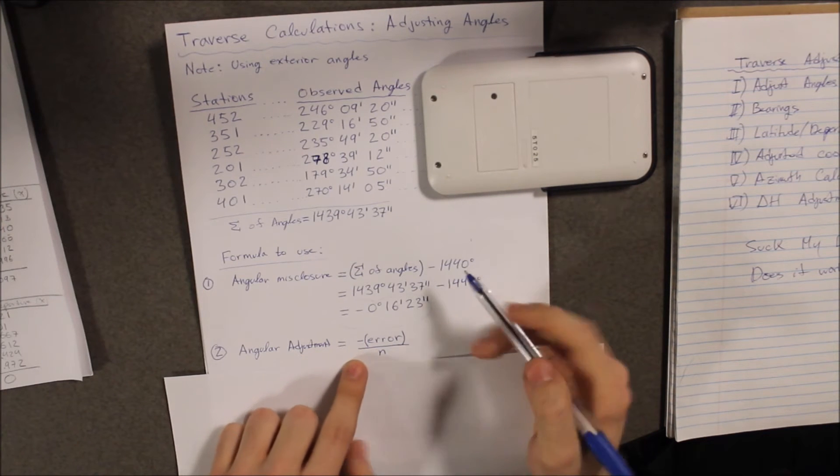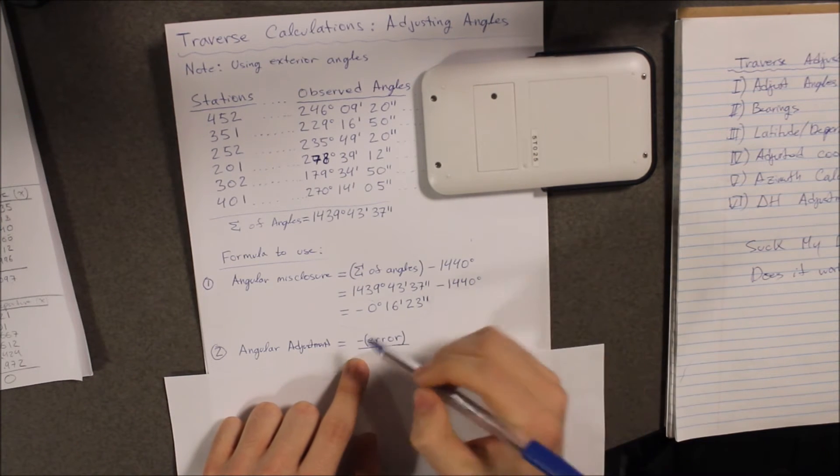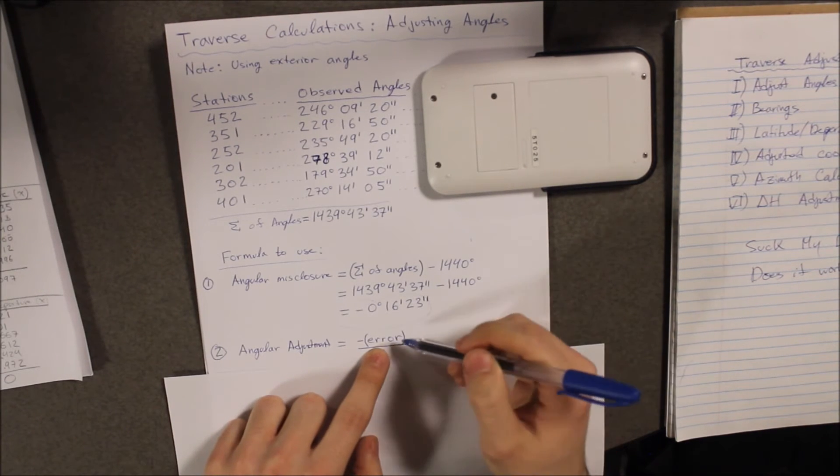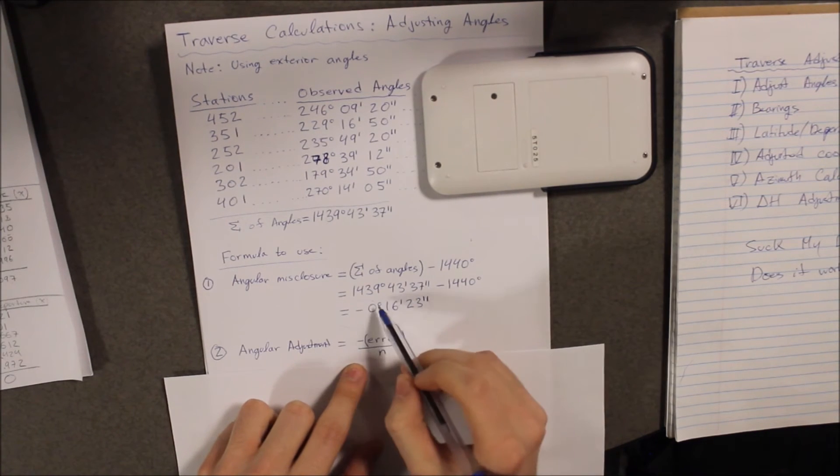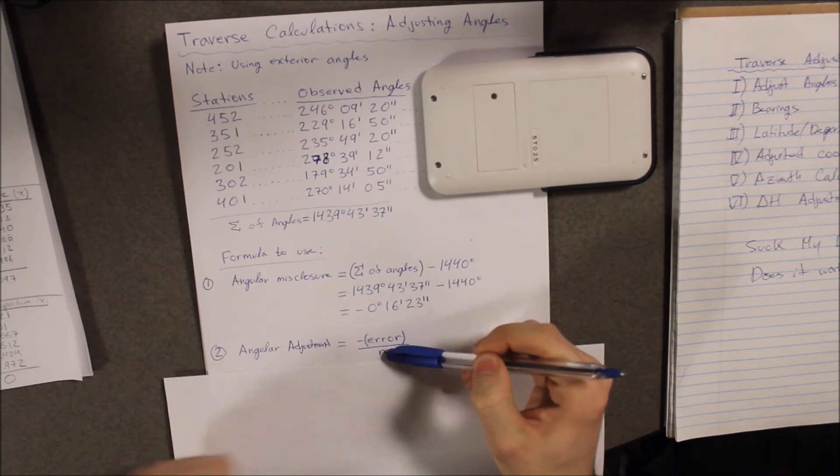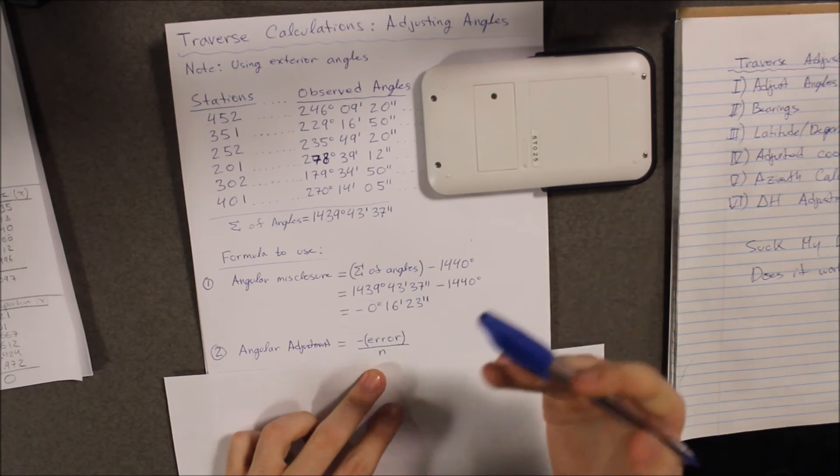So, the angular adjustment is equal to the negative error. Now, this negative sign is crucial. The error or misclosure is what you got from your previous results. And n is the number of sides you have. Of course, you should already know this. So, in our case, it is six.